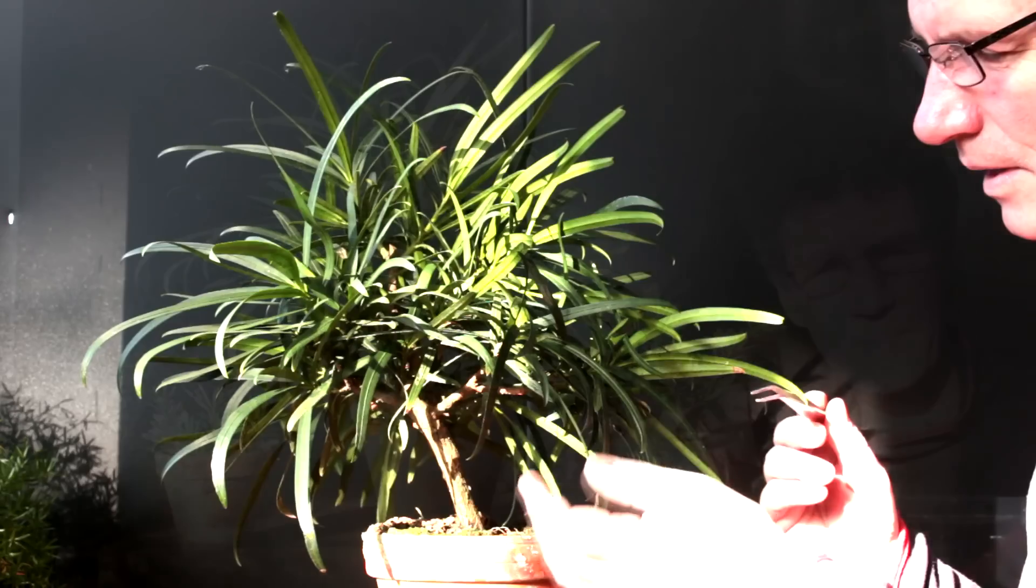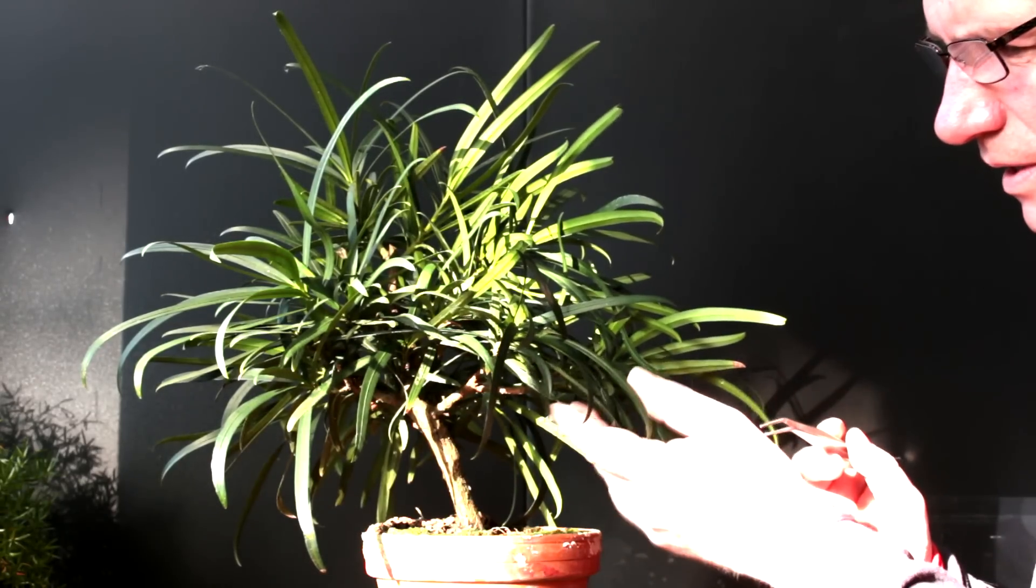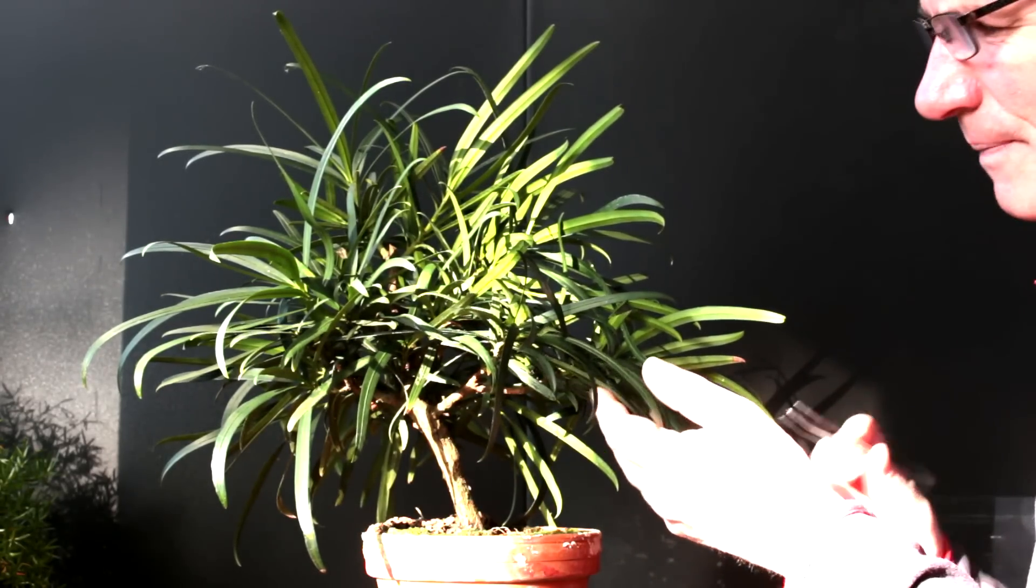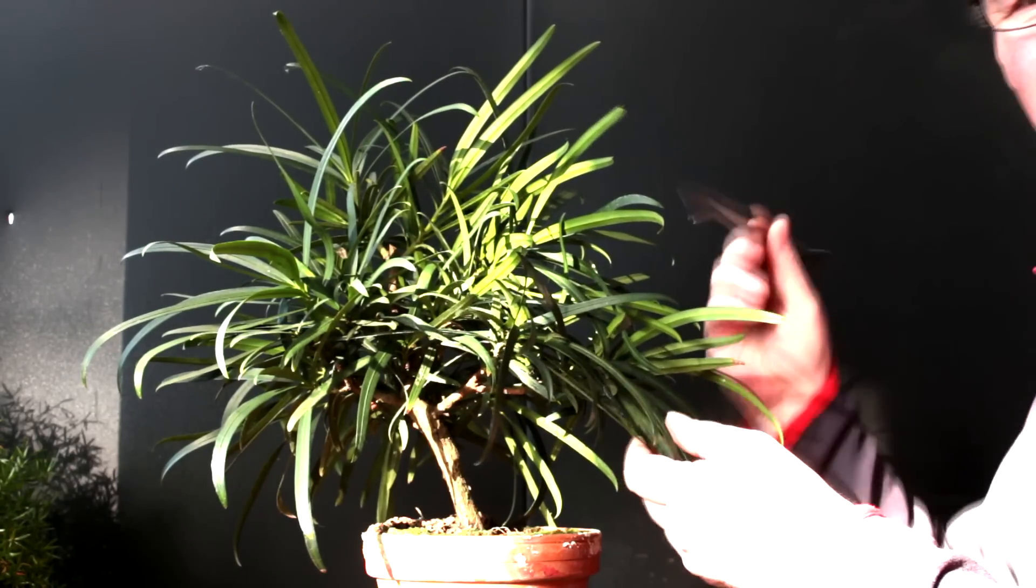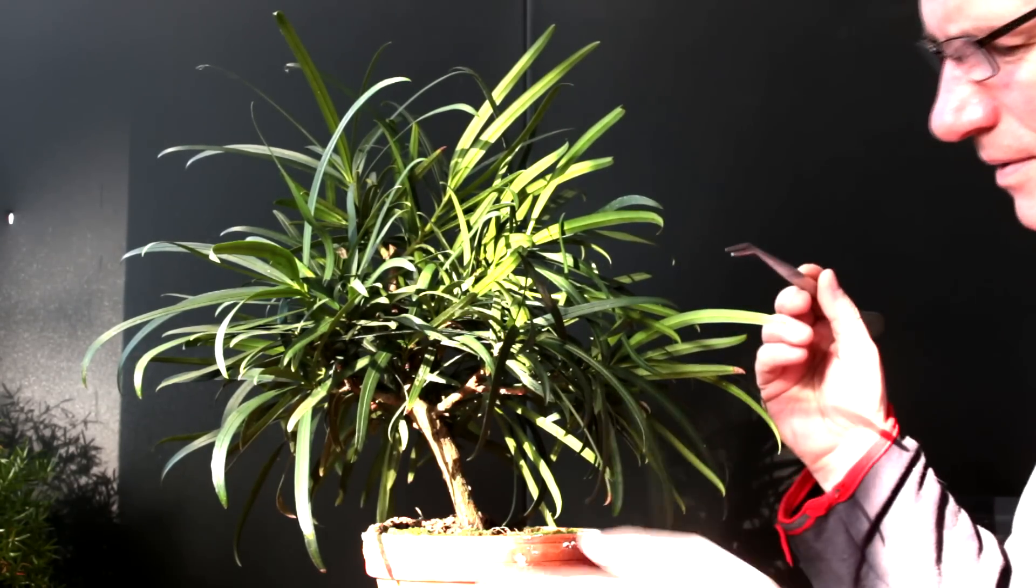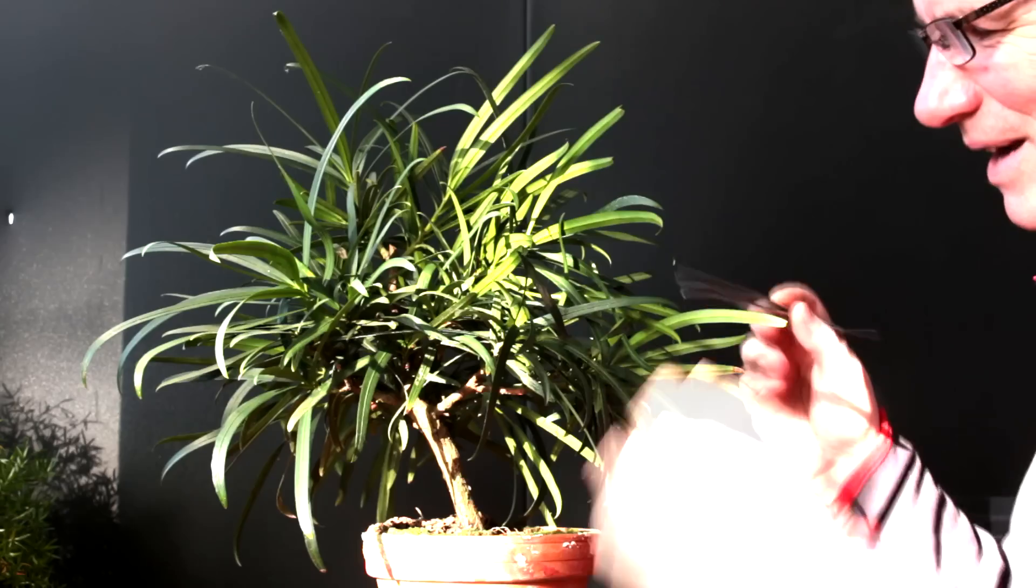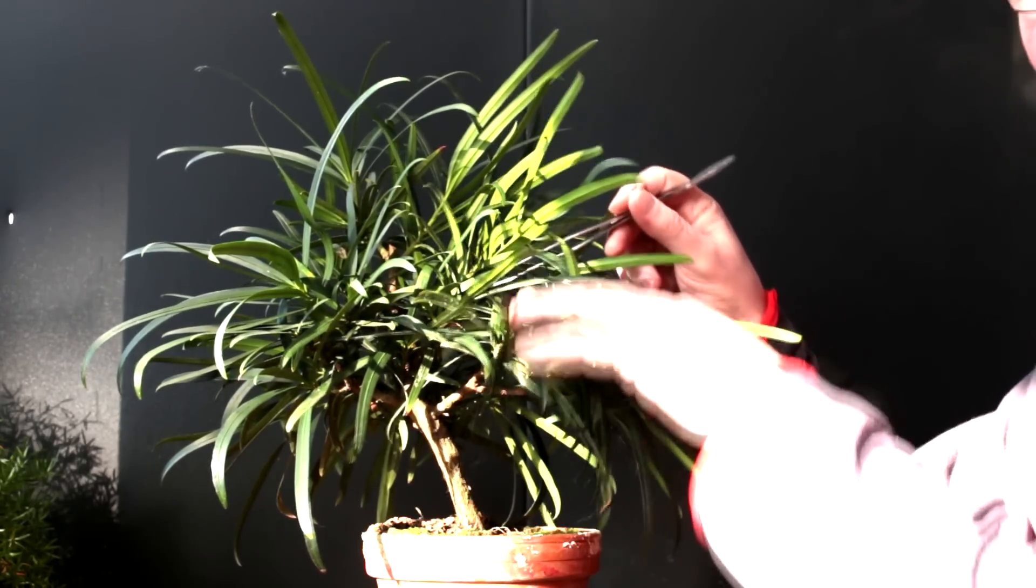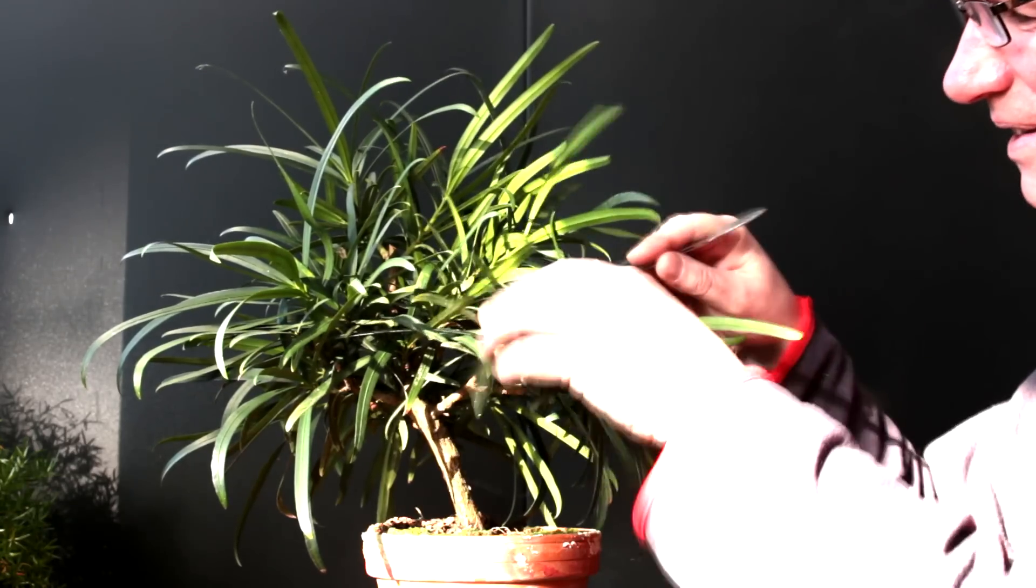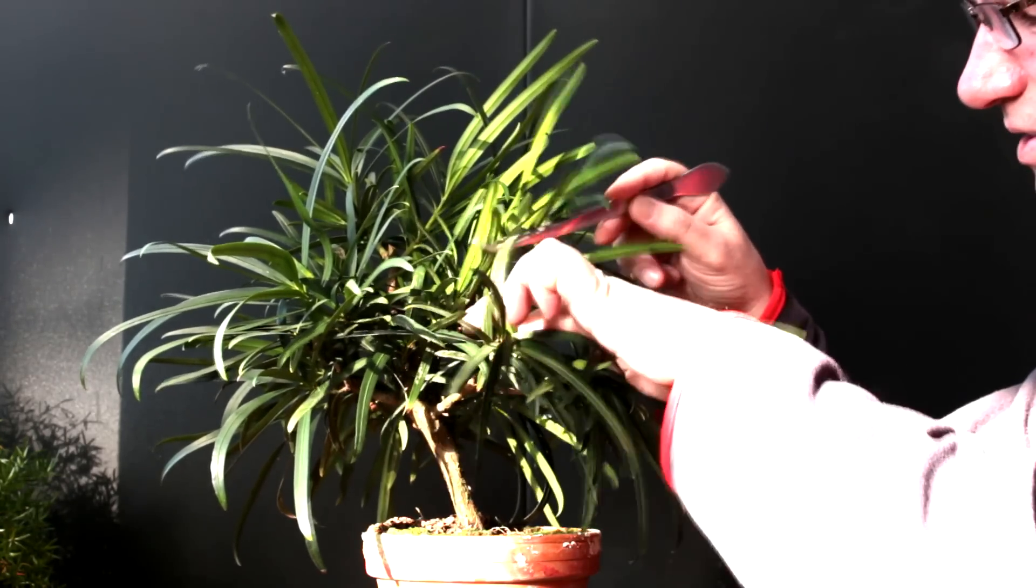So I'm going to put the small leaf ones away. We're not going to do anything to those today, but we are going to work on this large leaf Podocarpus. I haven't done much work to this tree in quite a few years actually. It's kind of in a state that you would probably buy one from a nursery. It's in a nursery pot, and it's kind of a tangled mess. There's just leaves everywhere. It's hard to see any branches.